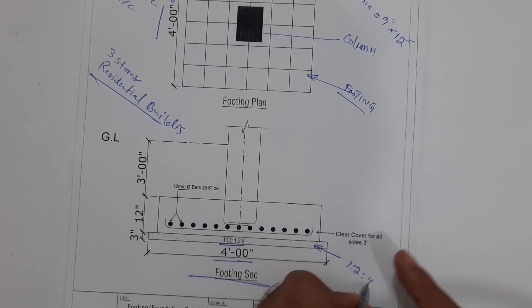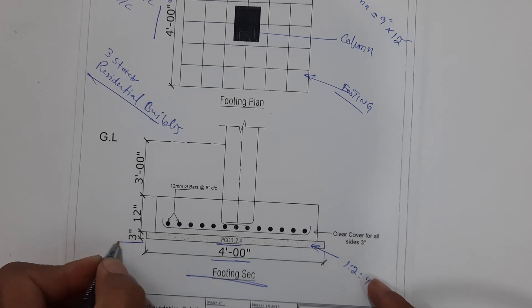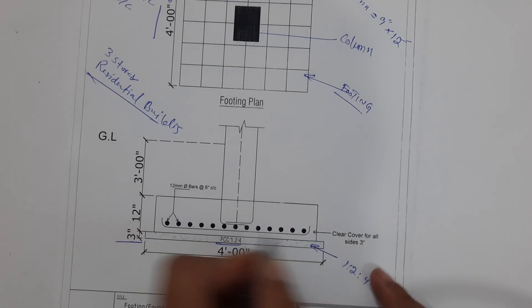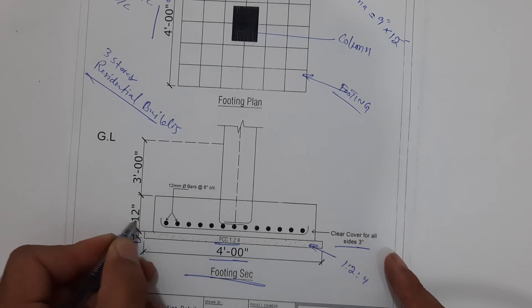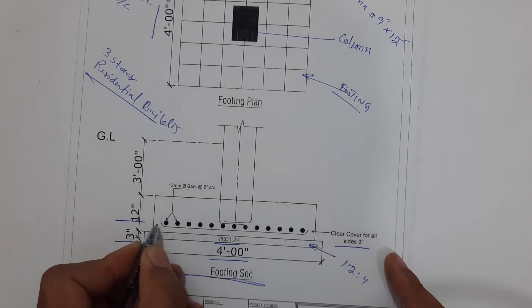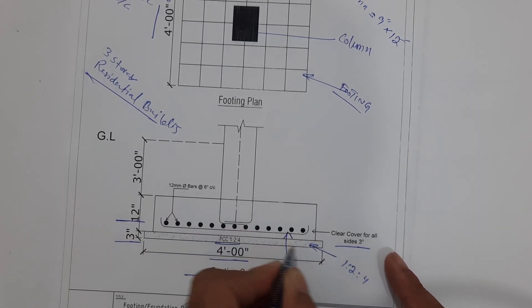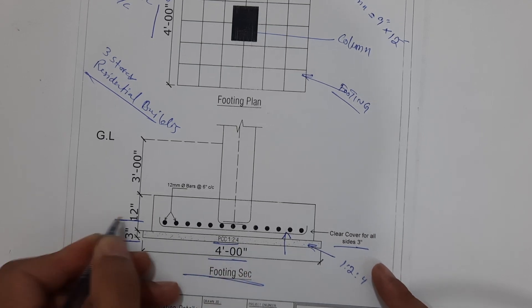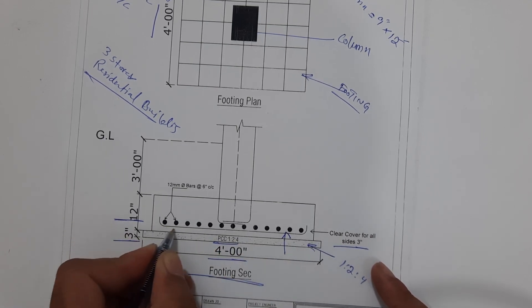Next, you can see concrete cover for all sides, which is 3 inches. The bed depth is 12 inches. Inside you can see at the bottom, after concrete cover, the concrete cover is 3 inches. So here you can see the steel reinforcement main bars and distribution bars.